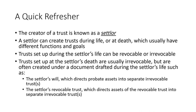The settlor could also set up during life a revocable trust agreement, which, at the settlor's death, would direct the assets of that revocable trust into one or more separate irrevocable trusts. So those irrevocable trusts established at death are going to create the focus of the next part of this series.